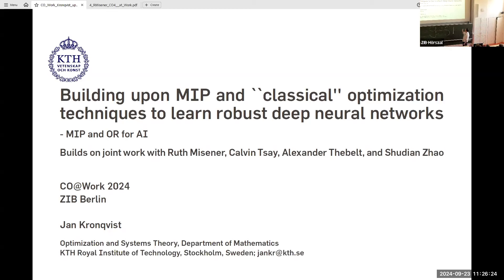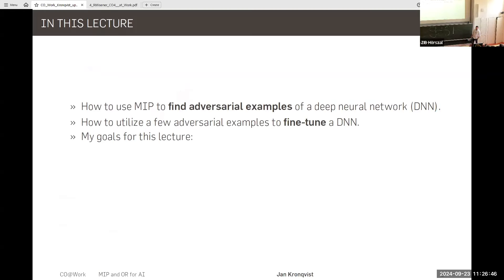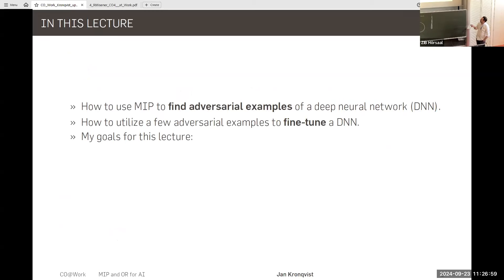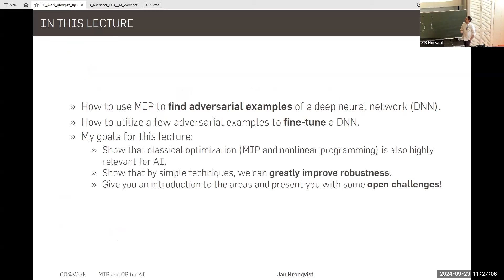I'm taking a different twist on this. We've had several talks using machine learning and AI for optimization — I'm looking at using our classical optimization tools for machine learning and AI. In this lecture, I'm going to briefly cover how to find adversarial examples of deep neural networks using MIP, and specifically how we can use these adversarial examples in the training process to fine-tune deep neural networks. My goal is to show that classical optimization techniques — basically MIP and nonlinear programming — are also highly relevant for AI.